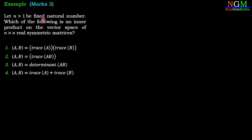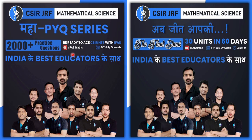Example: Let n > 1 be a fixed natural number. Which of the following is an inner product on the vector space of n × n real symmetric matrices? Option 1: ⟨A,B⟩ = (trace A)(trace B). Option 2: ⟨A,B⟩ = trace(AB). Option 3: ⟨A,B⟩ = determinant(AB). Option 4: ⟨A,B⟩ = trace(A) + trace(B).